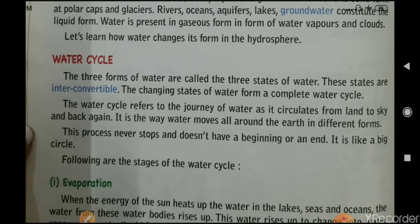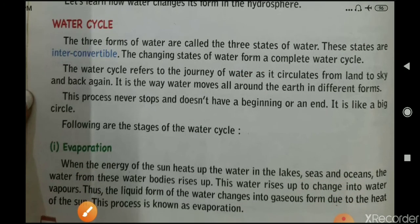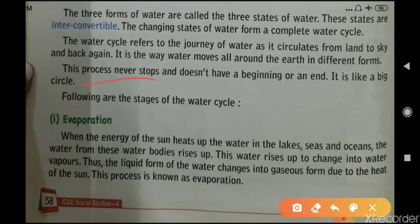The three forms of water — solid, liquid, and gas — are known as the states of matter. These states are interconvertible, meaning they can change from one state to another. The changing states of water form a complete water cycle. The water cycle refers to the journey of water as it circulates from land to sky and back again. This process never stops and doesn't have a beginning or an end — it is like a big circle that continuously keeps going. There are four stages of the water cycle.